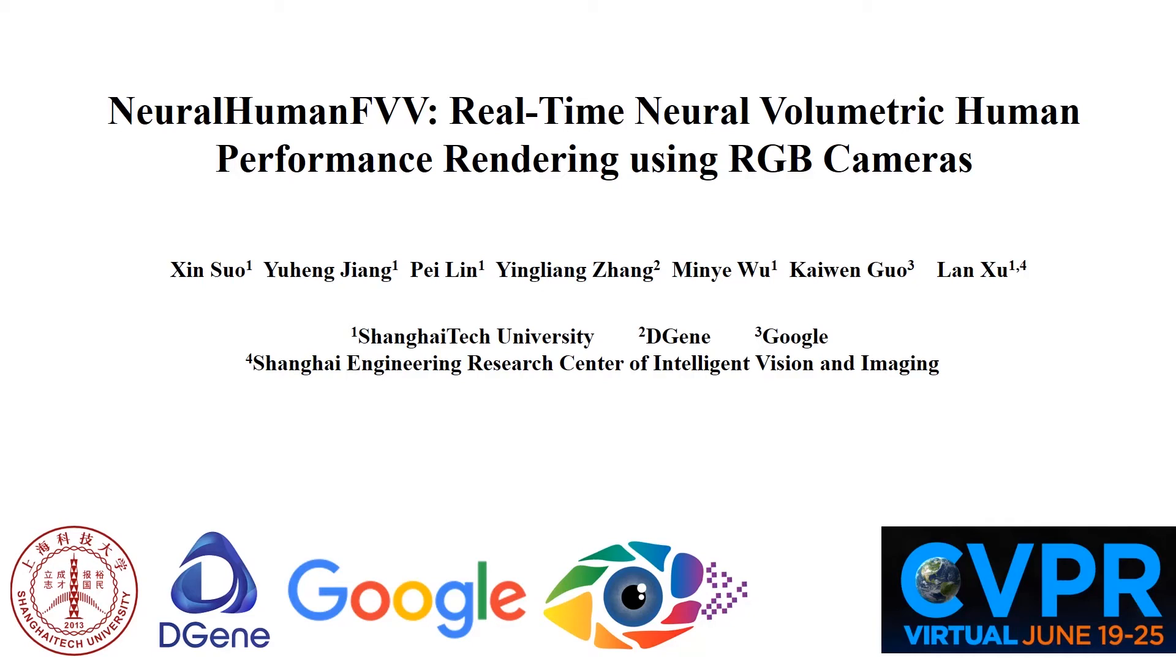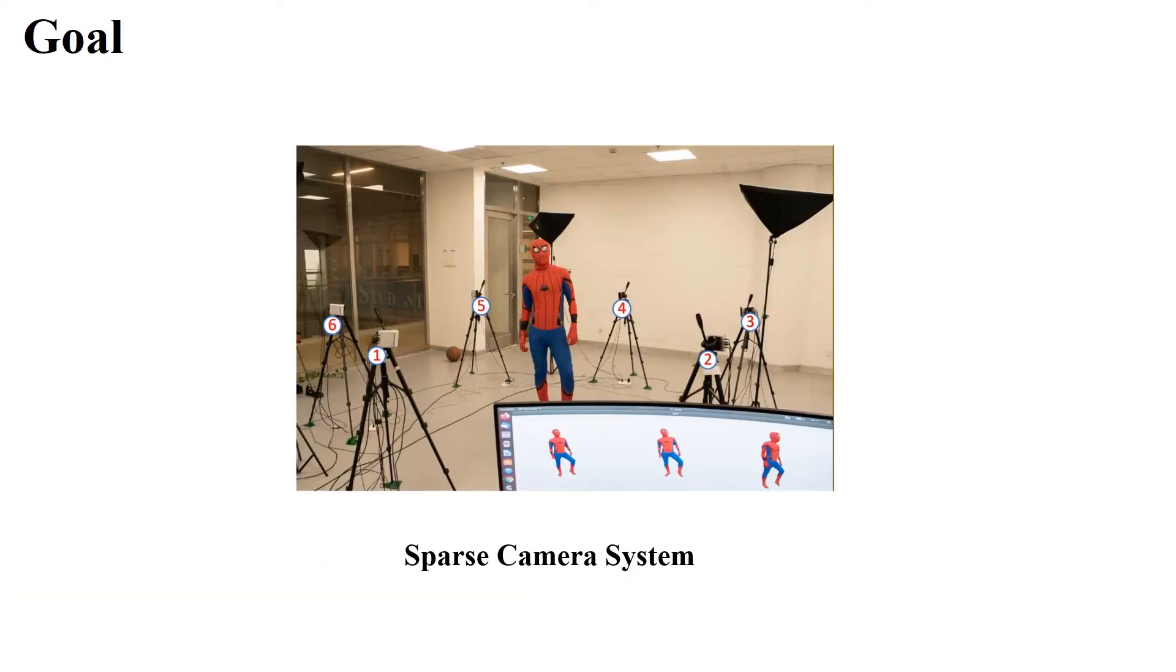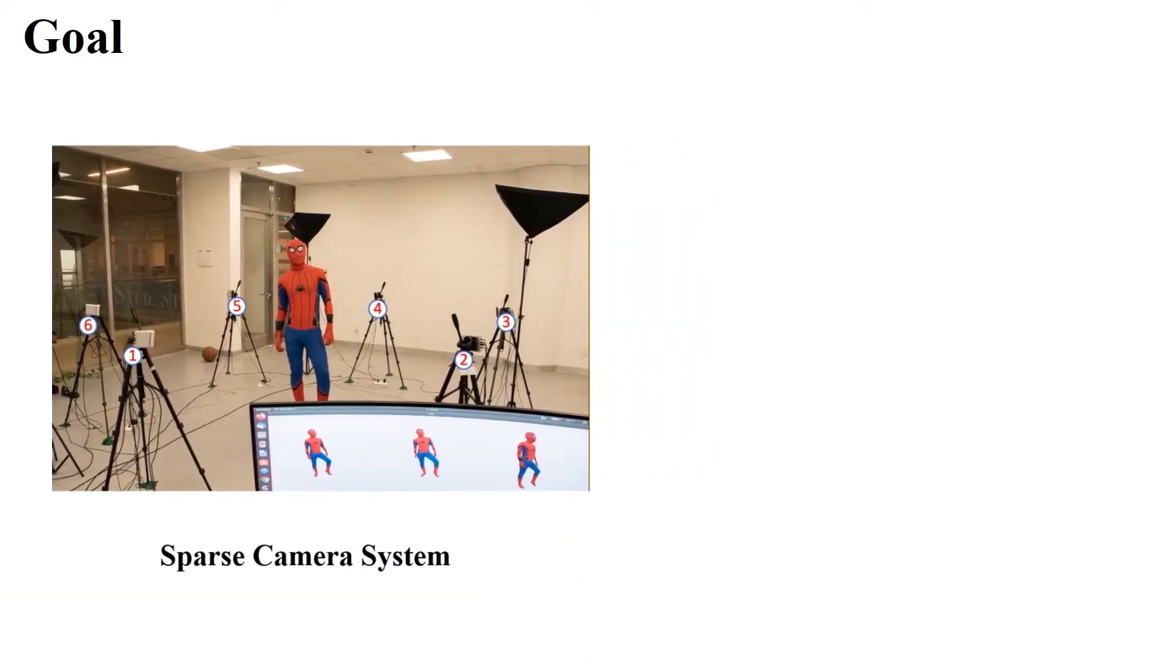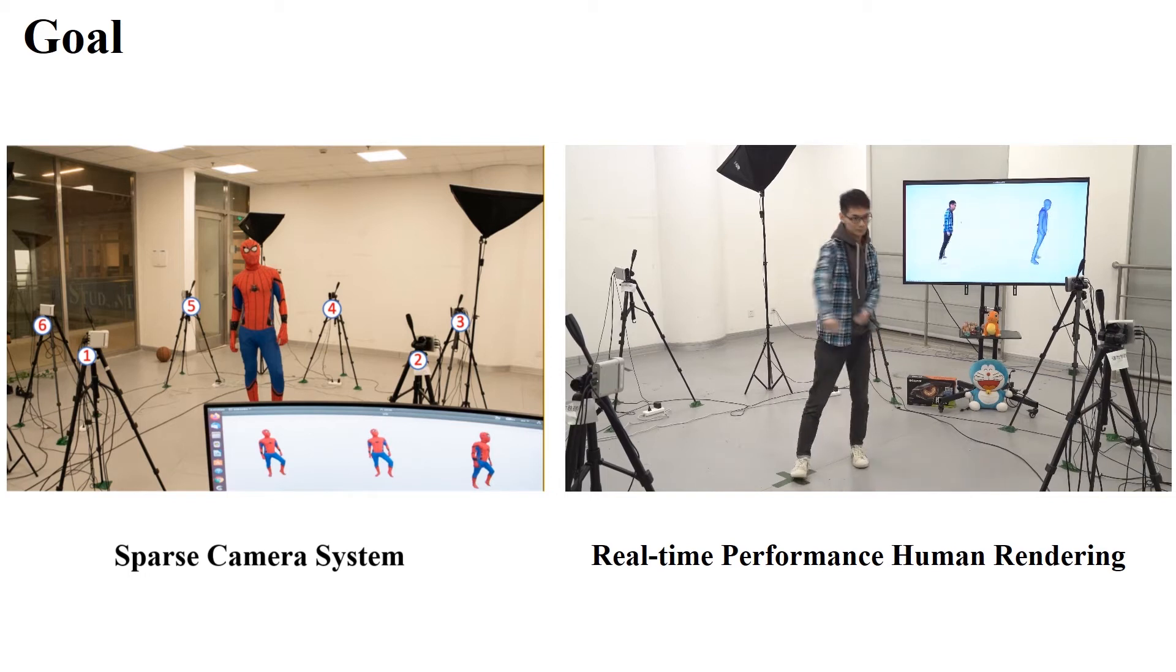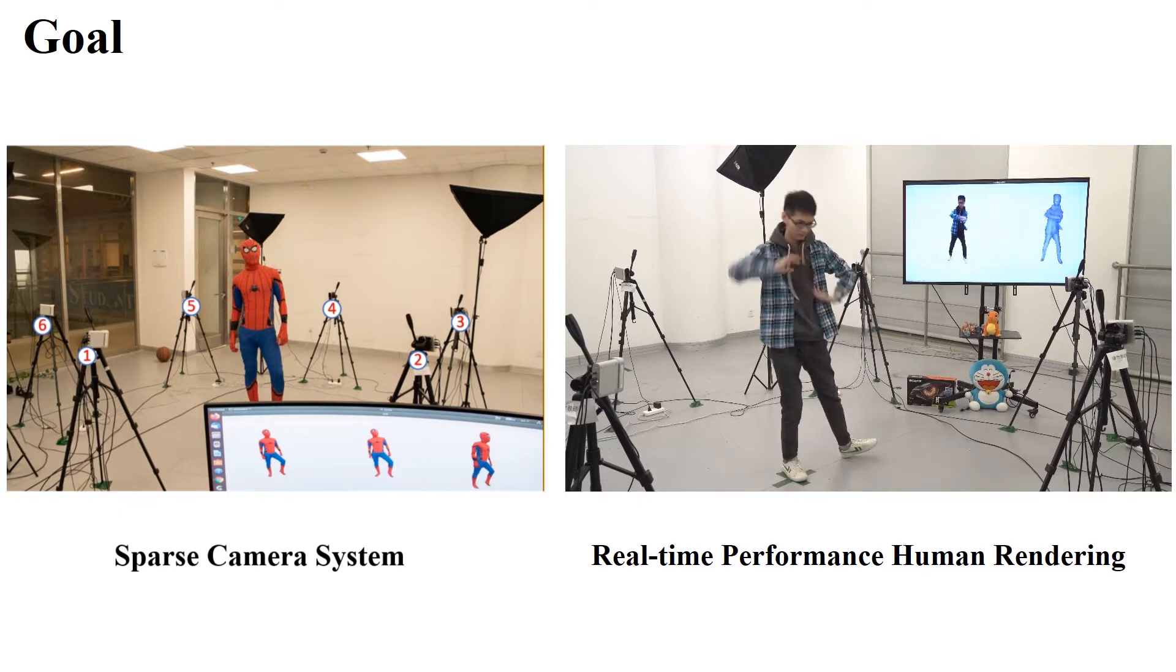In this work, we present the NeuroHuman FVV method, a real-time neural human performance rendering system which can generate both high-quality geometry and photorealistic texture of human activities in arbitrary novel views using only RGB cameras.